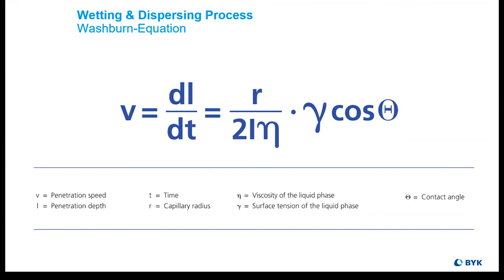Wetting and dispersing additives can be defined as substances which are designed to reduce the contact angle between the pigment and the binder solution. This will help accelerate the penetration speed of the liquid into the agglomerate structure. The surfactant structure, comprising polar, hydrophilic, and nonpolar, hydrophobic structural elements, are combined in one molecule.